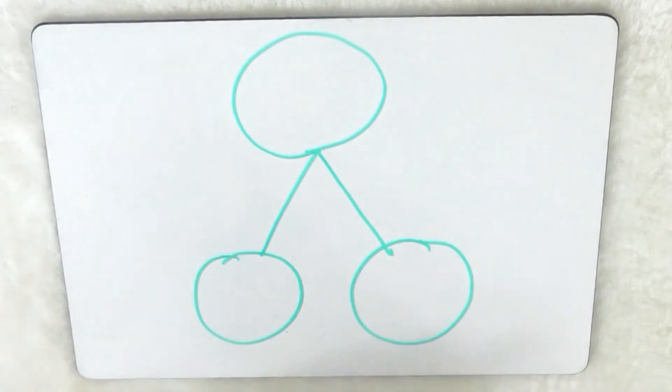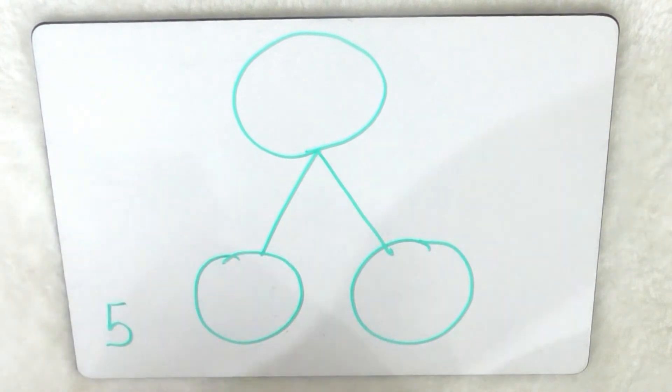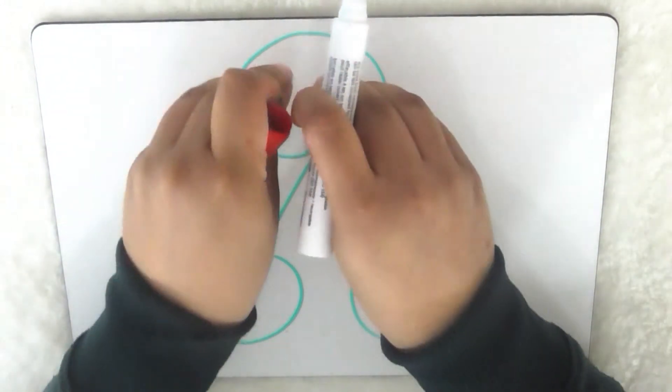So if I wanted to double the number five, that means I need to have five here and five here, then I need to count all together and put the answer here.